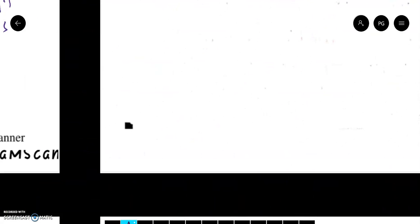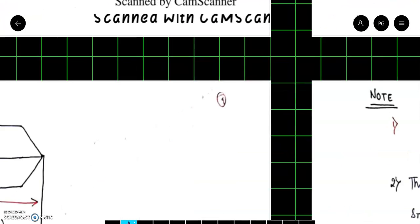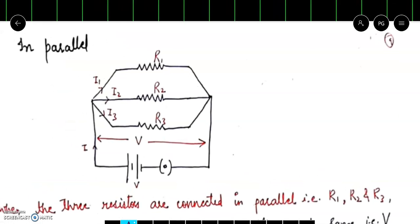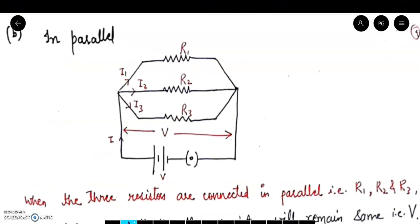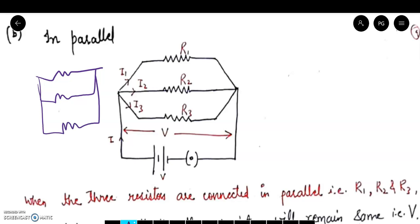Let's move to the next combination — parallel combination. In a parallel combination, I connect three resistors R1, R2, and R3 across each other — each resistor connected across the same two nodes. Three resistors connected in parallel, with a battery connected across them.